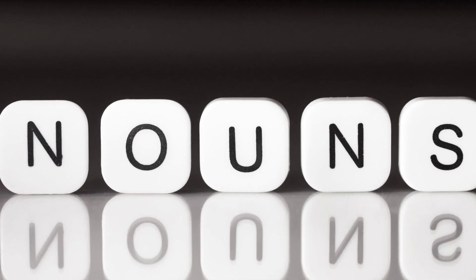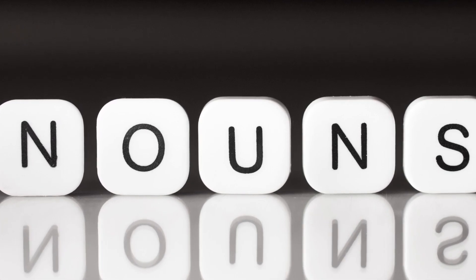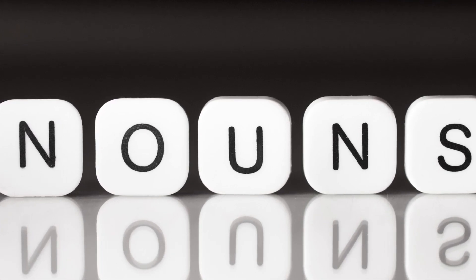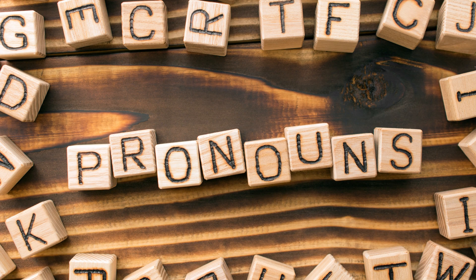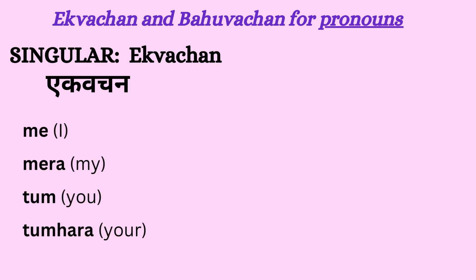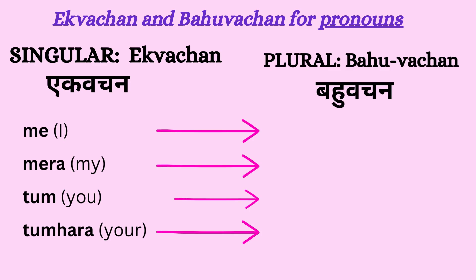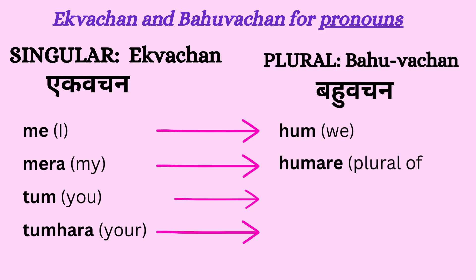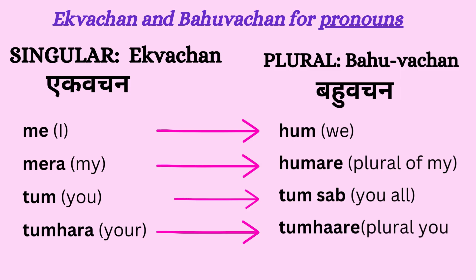It is important to mention here that just as we learnt ekvachan and bahuvachan for nouns, similarly there are also ekvachan and bahuvachan for pronouns. Some examples of singular pronouns are: main, mera, tum, tumhara. And the bahuvachan for these pronouns: main becomes hum, mera becomes humare, tum becomes tum sab, and tumhara becomes tumhare.